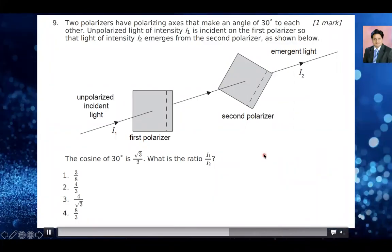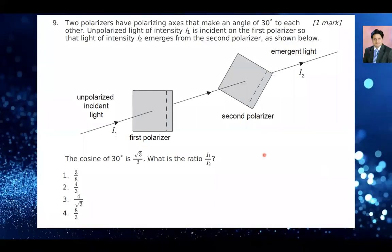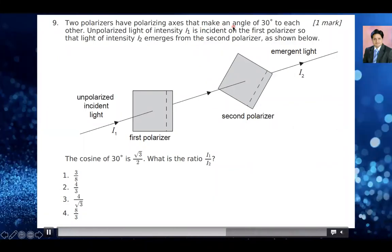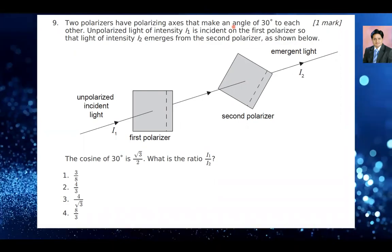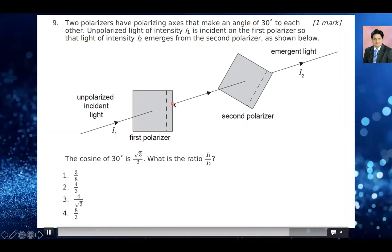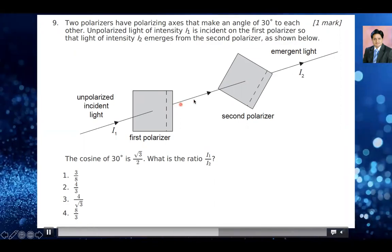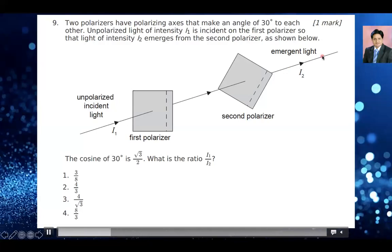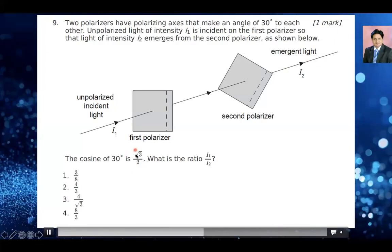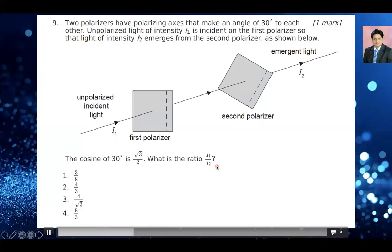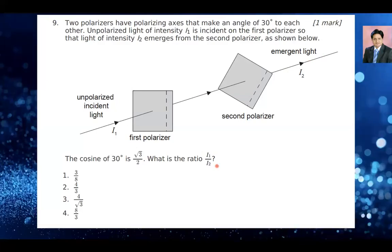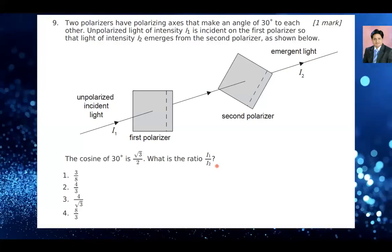Question number nine. Two polarizers have polarizing axes that meet at an angle of 30 degrees to each other. Unpolarized light of intensity I1 is incident on the first polarizer, and light of intensity I2 emerges from the second polarizer. What is the ratio of I1 over I2? You need to use Malus's law: I = I₀ cos²θ. The unpolarized light entering is I1, so the light after the first polarizer is I1/2.